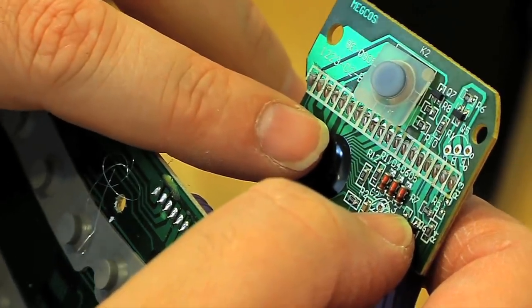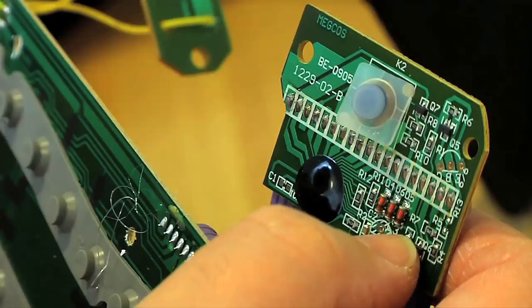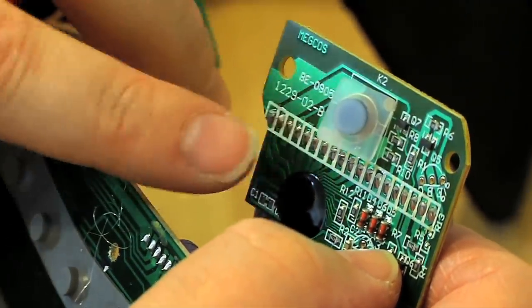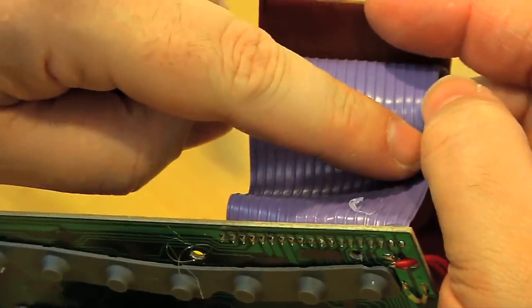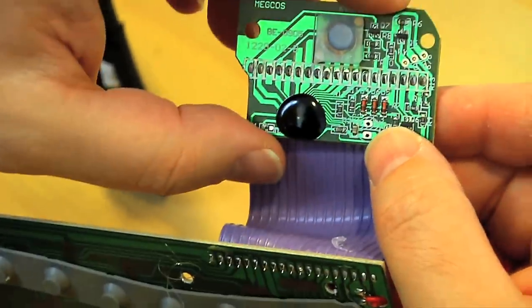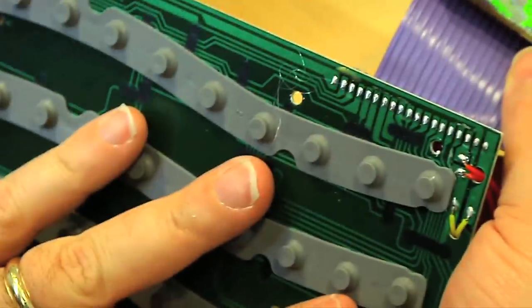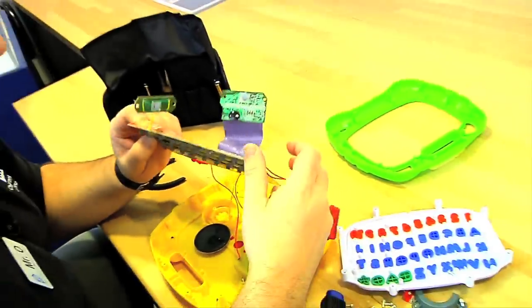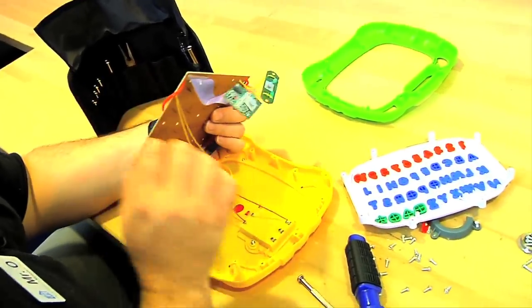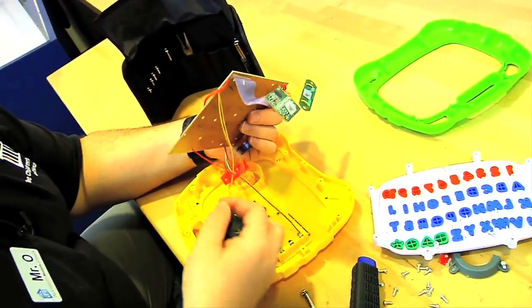You see this big black blob here? This is a processor that basically runs the logic for the whole game. This right here is actually a whole series of wires that run from this pad to this pad, so the two can communicate together. And then everything runs out of here, right down to our speaker here.